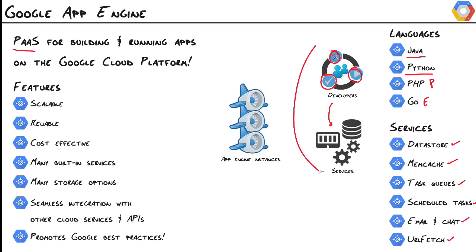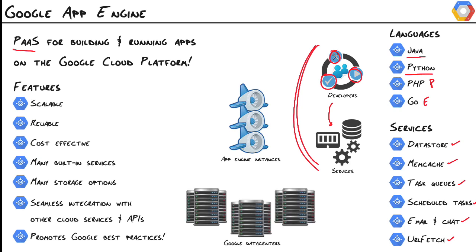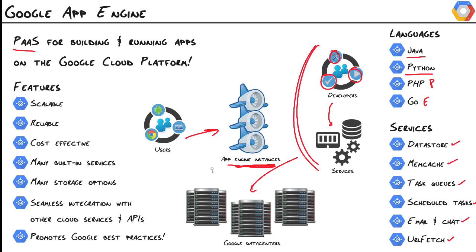As a developer, this is all we're working on — building an application and utilizing the services that App Engine provides. Let's say we built an App Engine app and deployed it into Google's Cloud so it's sitting inside their data centers and it's ready for users to consume. The real magic here lies in App Engine instances — fully managed, sandboxed environments that contain everything our application needs to run.